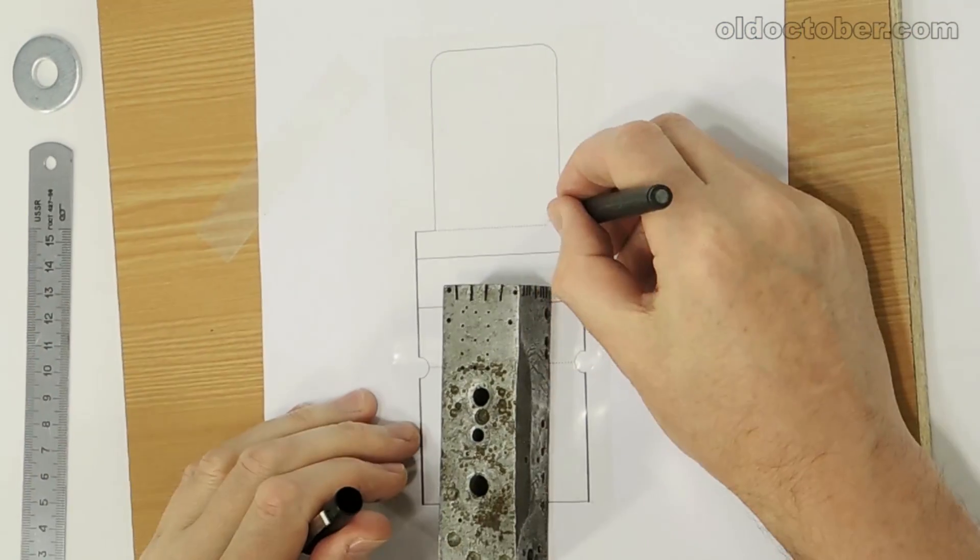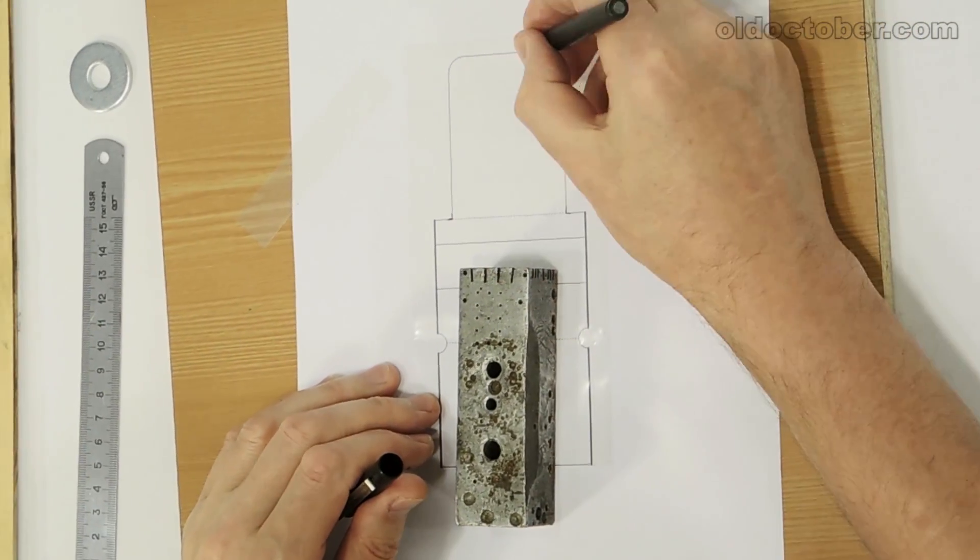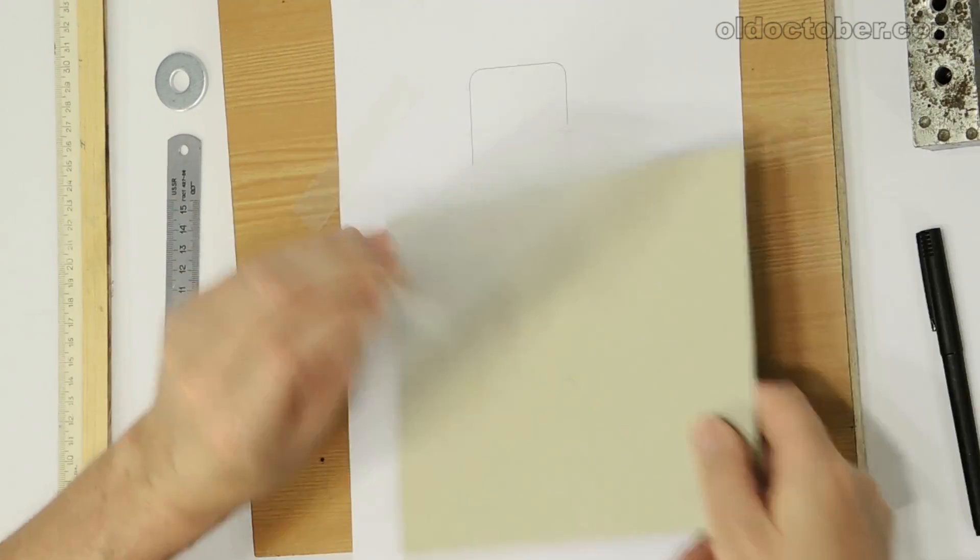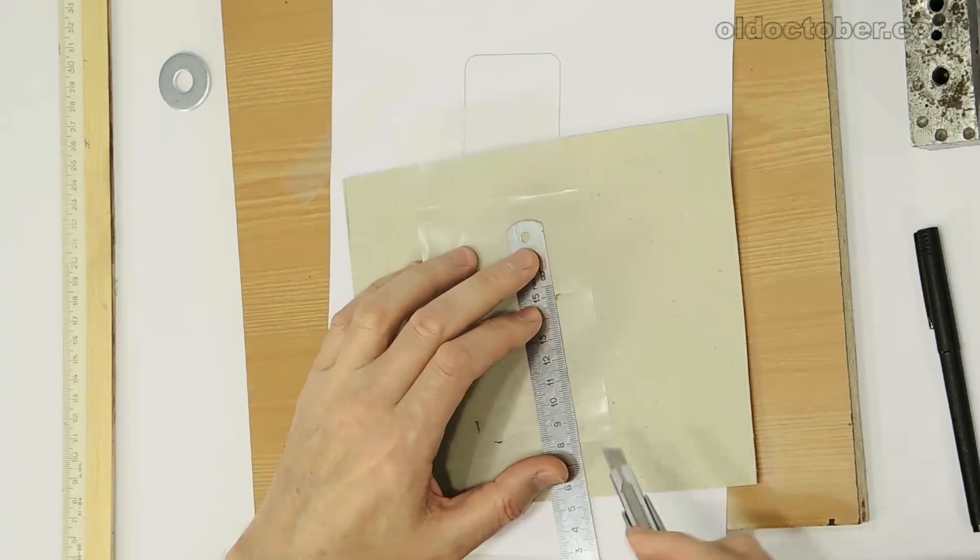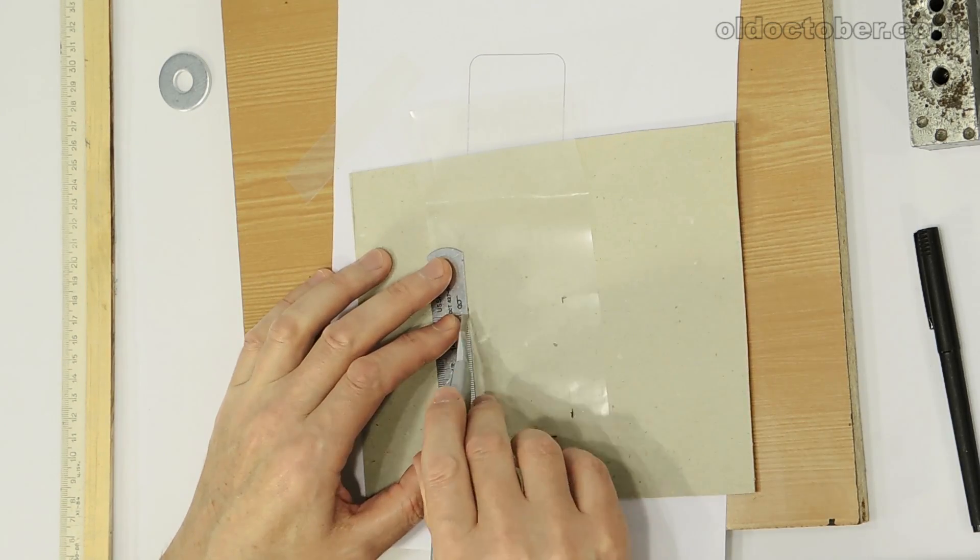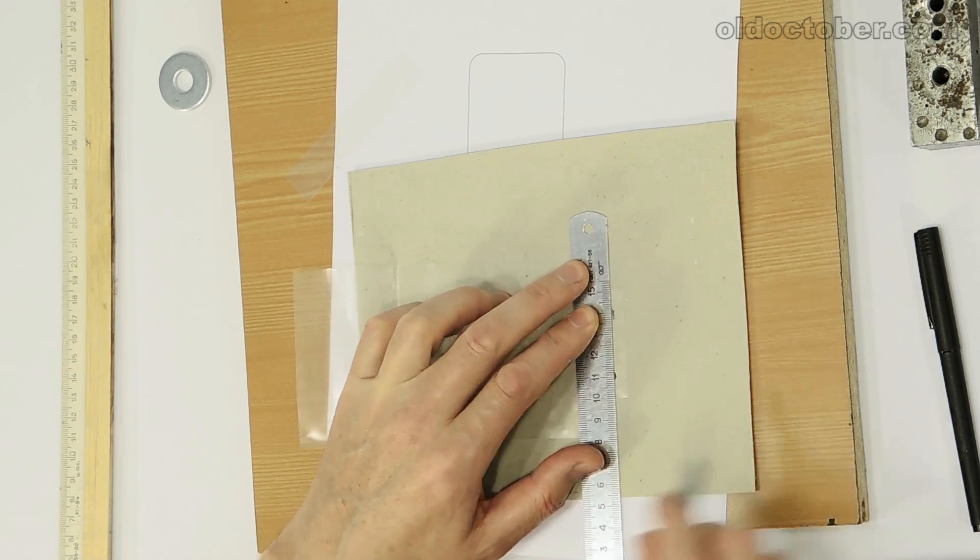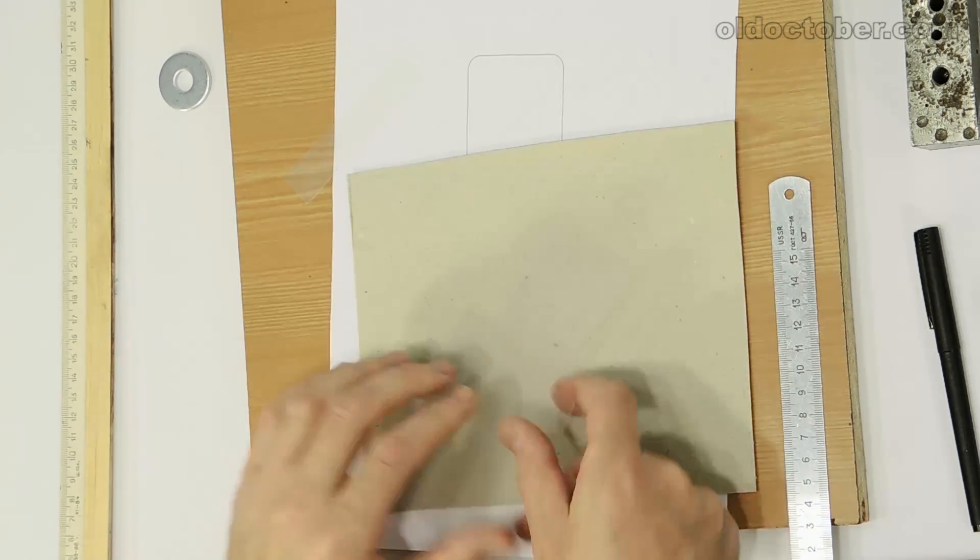From polyethylene film 200 to 300 microns thick and more, you can make convenient transparent cases for various gadgets and small electronic devices. As an example, we'll produce a clip to store the battery pack.